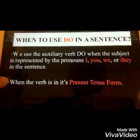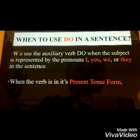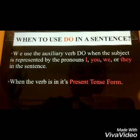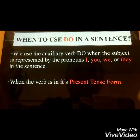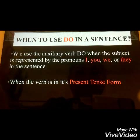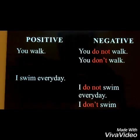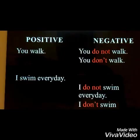When are we going to use do in a sentence? We use the auxiliary verb do when the subject is represented by the pronouns I, you, we, or they in the sentence, or when the verb is in its present tense form. For our examples, you have 'you walk.' While in its negative form, we can say 'you do not walk,' or 'you don't walk.' Why did we use do here? Because of the subject pronoun, which is you.